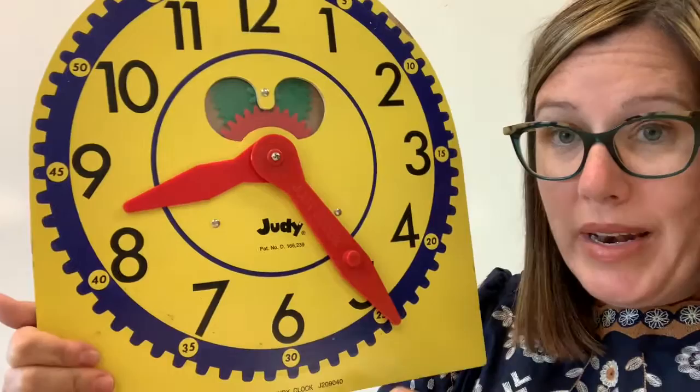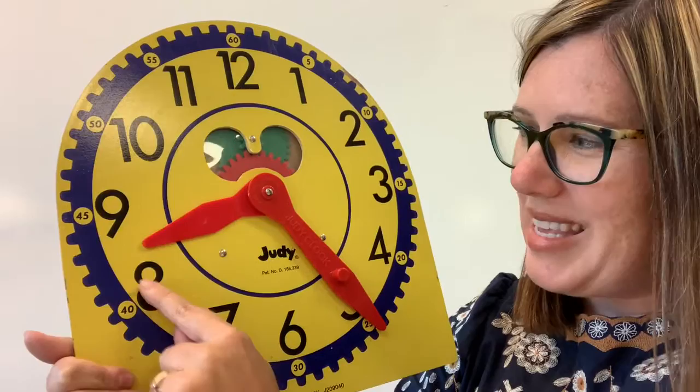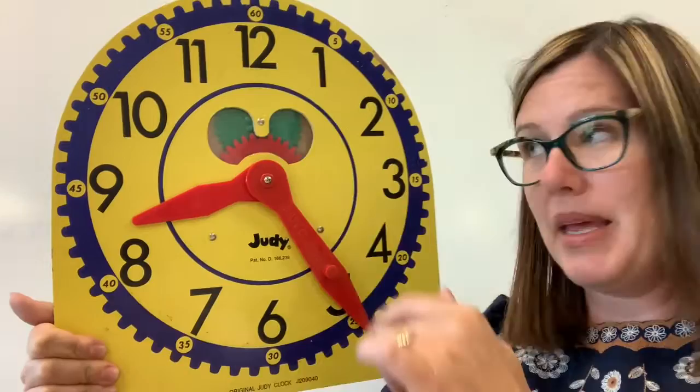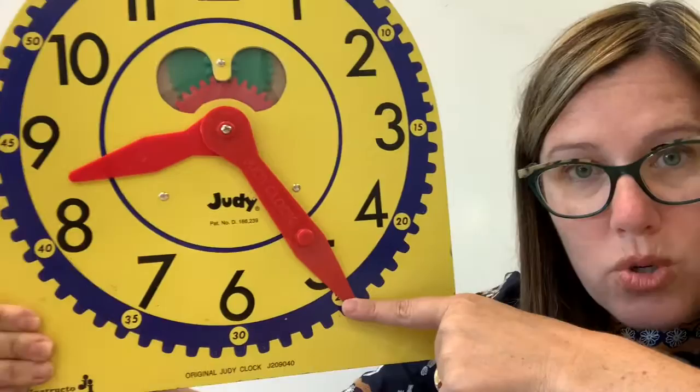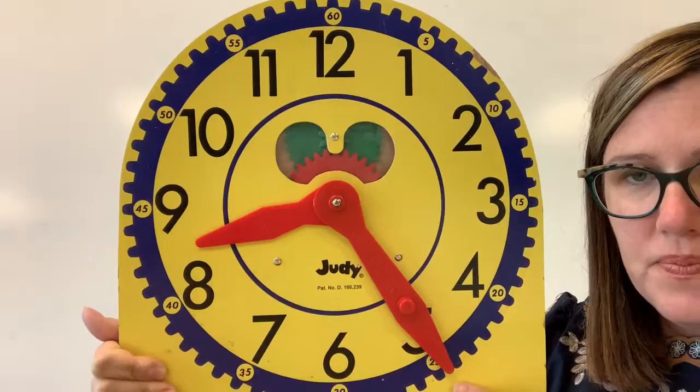And what if I do this? So when I read this time, I usually try to find the hour hand first. So I think this is between the eight and the nine, but it's not nine o'clock yet. So it's eight o'clock and then we have to figure out how many minutes we are at. So when I count minutes, I start at the 12 and I start counting by fives. 5, 10, 15, 20, 25. So this is 8, 25.